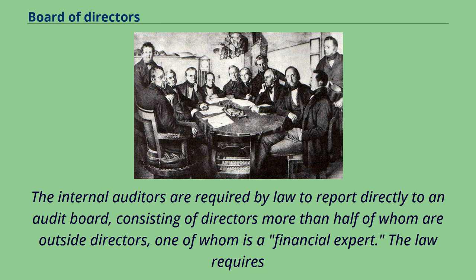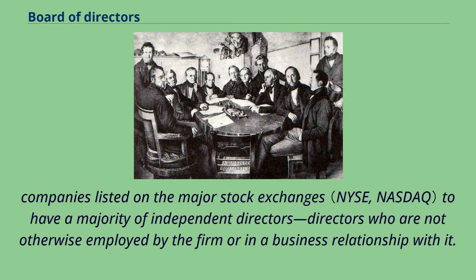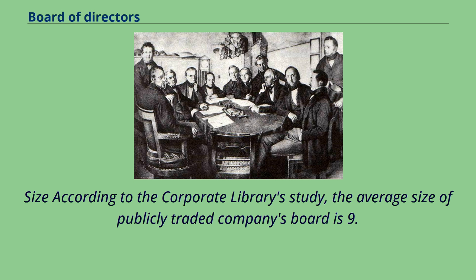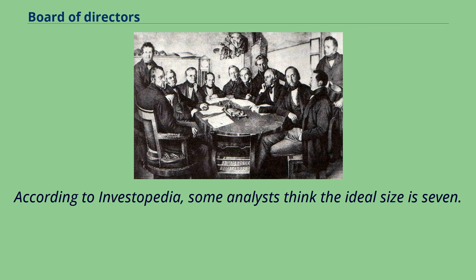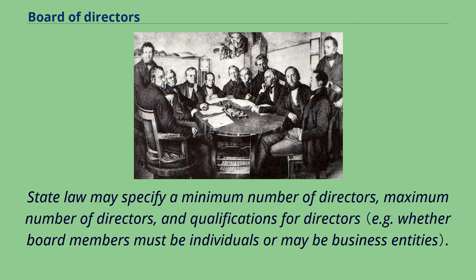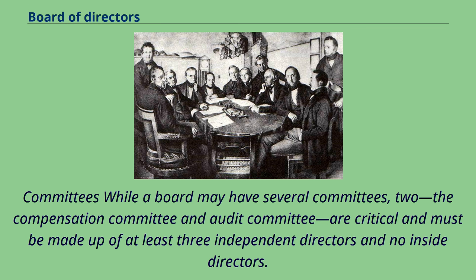The law requires companies listed on the major stock exchanges to have a majority of independent directors — directors who are not otherwise employed by the firm or in a business relationship with it. According to the Corporate Library Study, the average size of a publicly traded company's board is 9.2 members, and most boards range from 3 to 31 members. According to Investopedia, some analysts think the ideal size is 7. State law may specify a minimum number of directors, a maximum number, and qualifications for directors. While a board may have several committees, two — the Compensation Committee and Audit Committee — are critical and must be made up of at least three independent directors and no inside directors. Other common committees include nominating and governance.